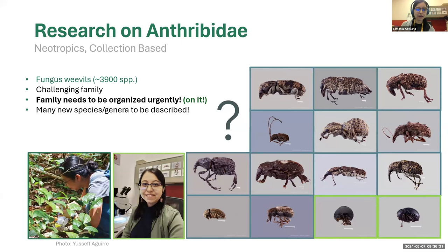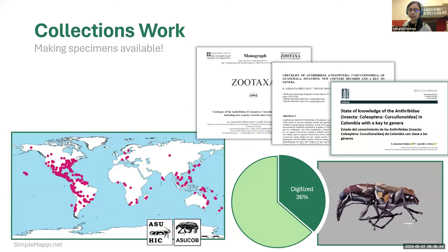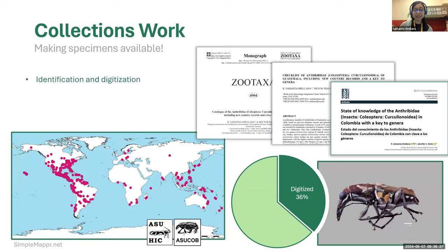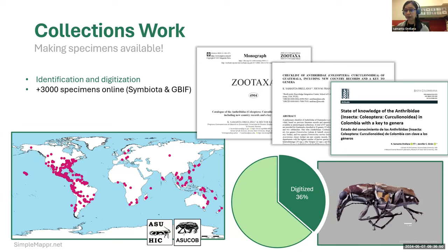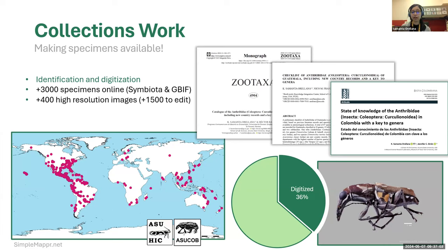The classification is a complete mess, so it's very important to start organizing it so we can describe new species, new genera, and new groups from around the world. I have been working mostly in collections, here at the Arizona State University Collections since 2019, identifying specimens and digitizing. I recreated the collection here at ASU. Now we have over 3,000 specimens online, available on Symbiota and GBIF. We have over 400 high-resolution images already available, and I still have to edit over 1,500 more.